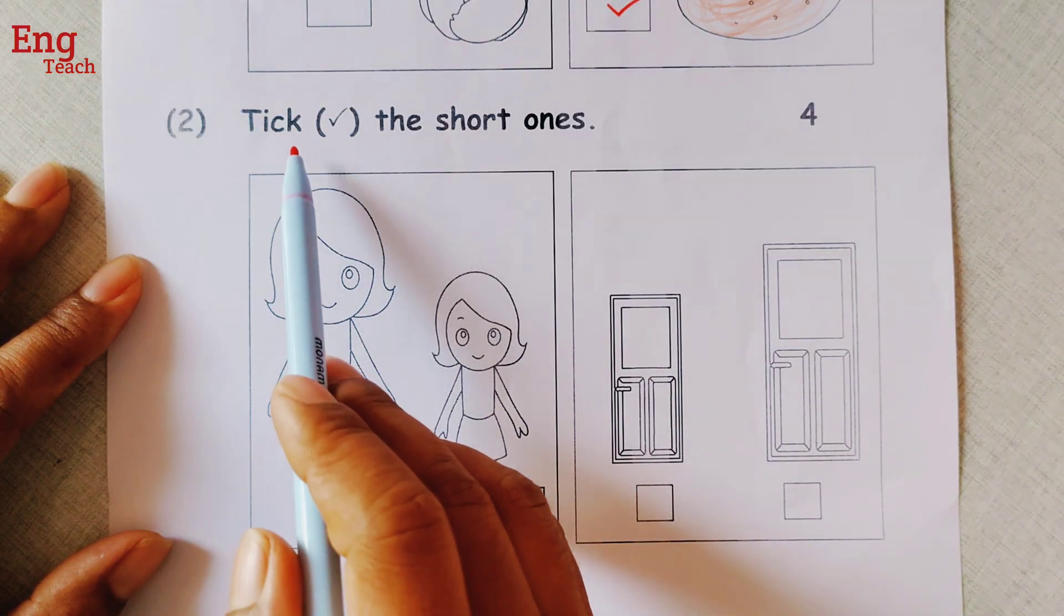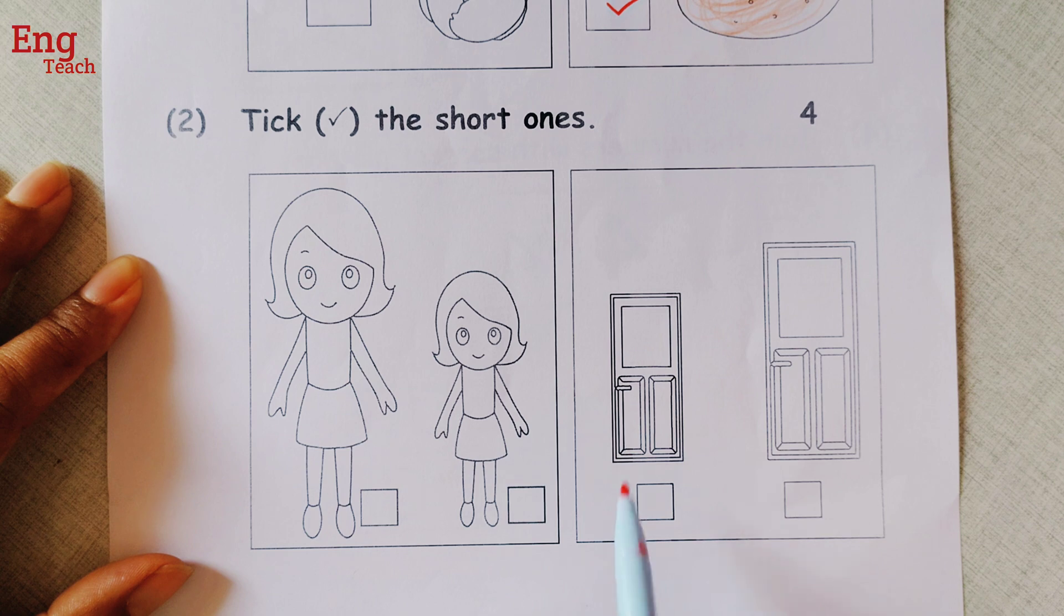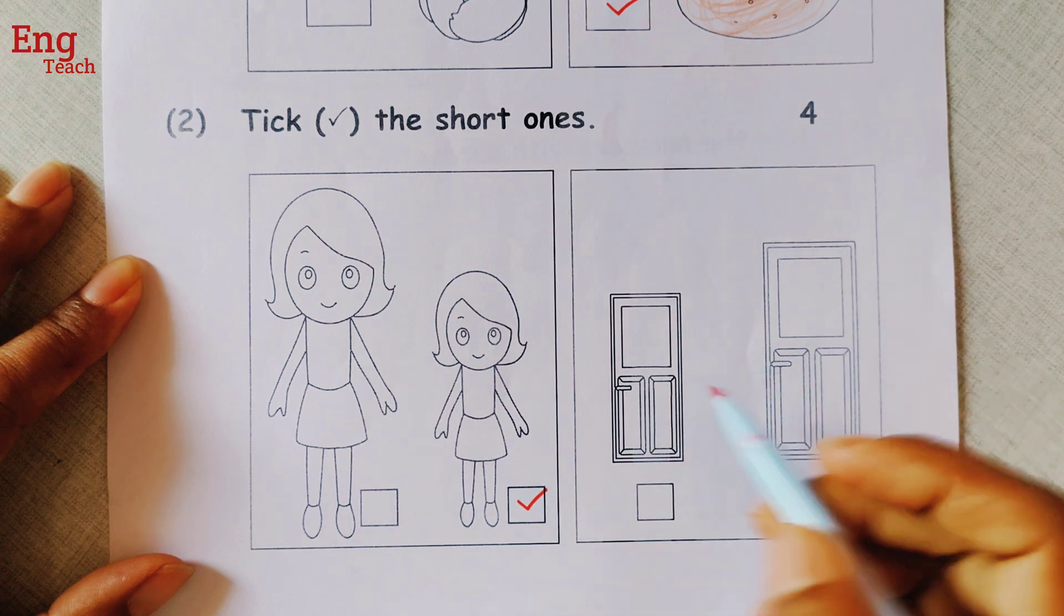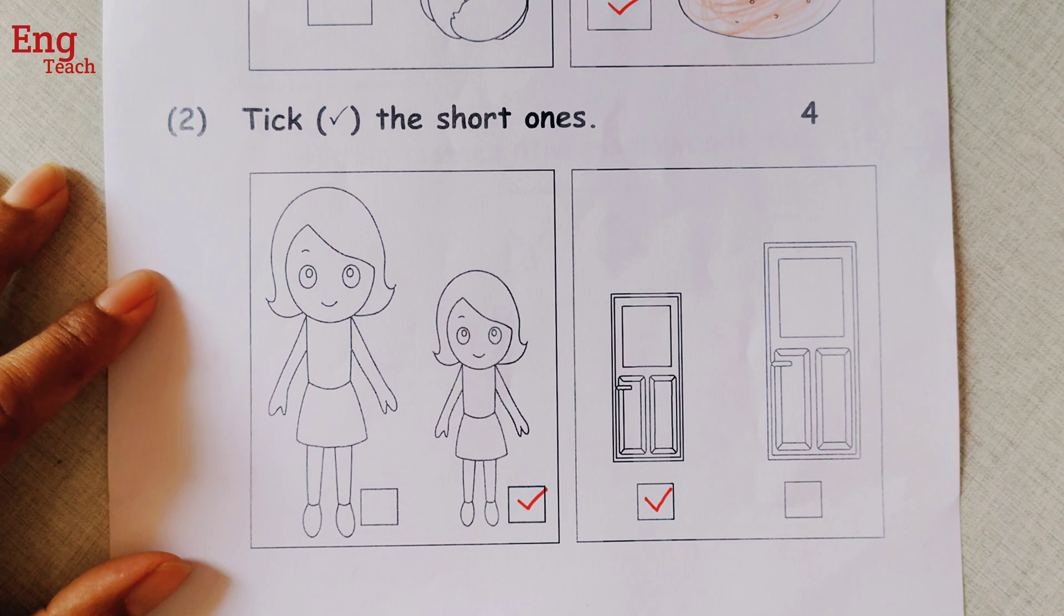Now number 2, tick the short ones. Now which one is short? This one or this one? Obviously this one is short. And here obviously this one is short. So tick the short ones.